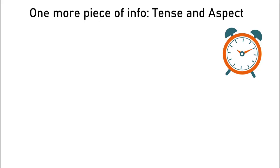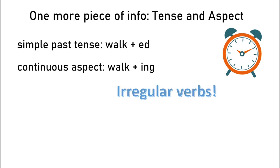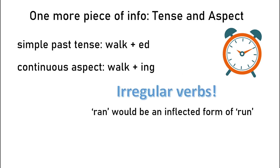Finally, in English, verbs are inflected to encode information about tense and aspect — as in the simple past tense, 'walk' plus '-ed,' or 'walked,' or the continuous aspect, 'walk' plus '-ing,' or 'walking.' Irregular verbs in English are also considered to undergo inflectional morphology, so 'ran' would be an inflected form of 'run.'